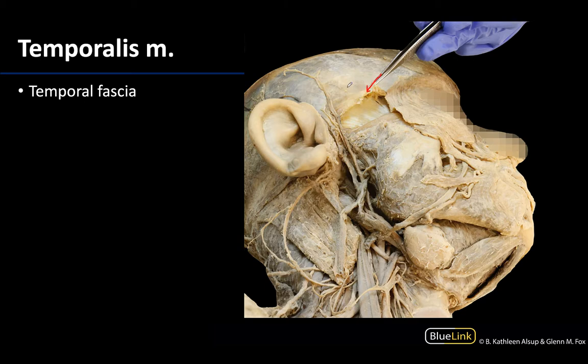We're pulling up the temporal fascia in order to see the deep temporalis muscle. You can see a little bit of the tendon here. This fascia is an investing fascia, particularly dense. The temporal fascia is not to be confused with the temporoparietal fascia, which is more superficial — at the same level as the SMAS, and superficial to the temporal branches of the facial nerve.